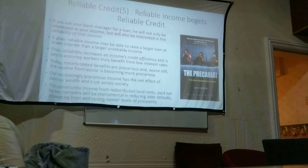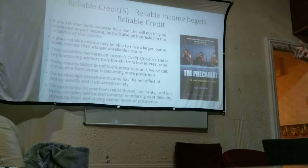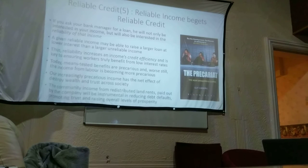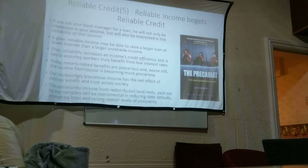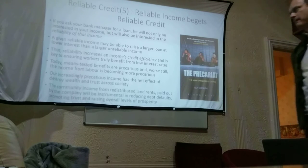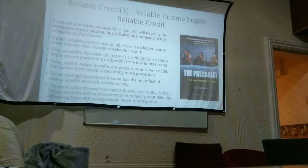Reliable income begets reliable credit. If you ask a bank manager for a mortgage, he will not only be interested in your income, but also in the reliability of that income. If you've got a three-month contract, the bank is going to be a lot less likely to offer you a mortgage or a big loan compared to if you've got a really steady job that's good for years and years. A given reliable income may be able to raise a larger loan at lower interest than even a larger income that is unreliable. Reliability increases an income's credit efficiency. So how you pay money out is as important as the quantity of money paid out.